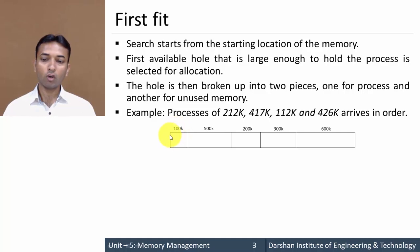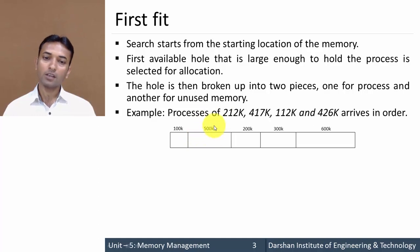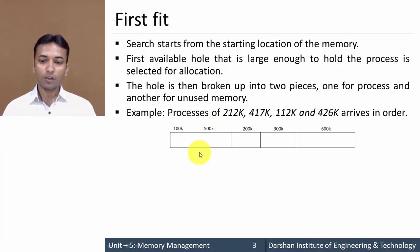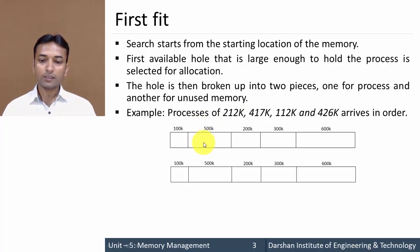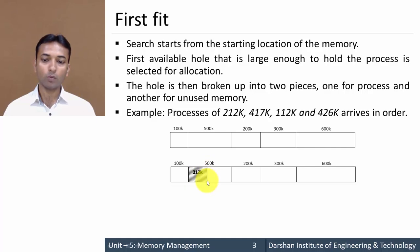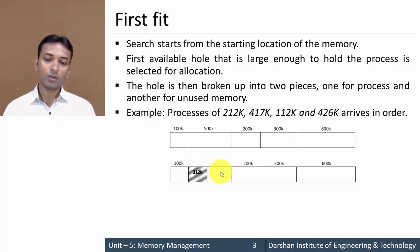The first partition of 100 KB is not large enough to hold this process. The second partition of 500 KB is large enough, so the algorithm stops here and allocates this partition to the process. This process is placed in the second partition, which is then divided into two parts: 212 KB allocated to the process and the remaining 288 KB as unused memory.